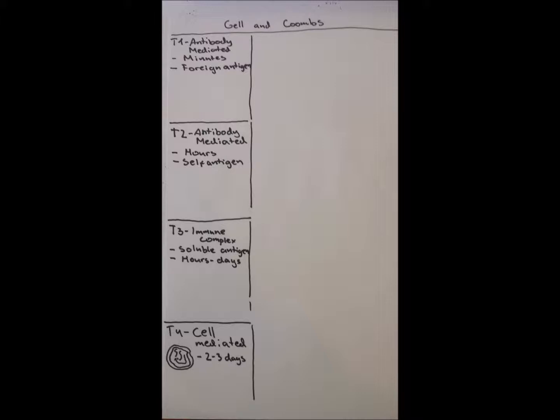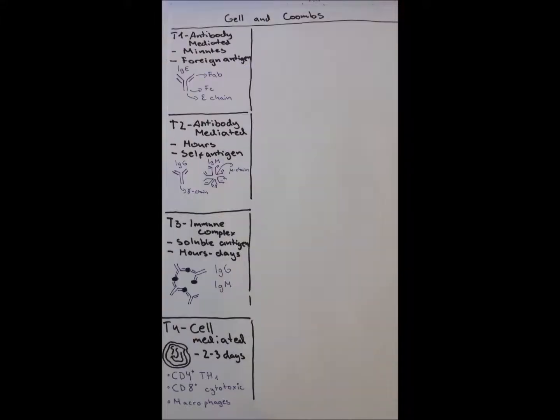Type 4 is cell-mediated, with 2 to 3 days onset. We can see progression in the size of the immune mediators from antibody to complex to cell in terms of mass and size, and also an increase in time taken to the effect.